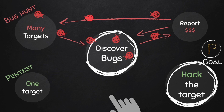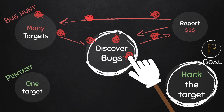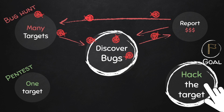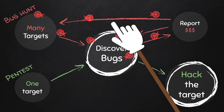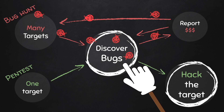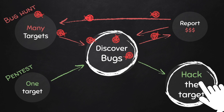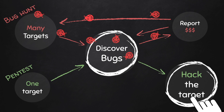In a pen test, you have only one target, because a company or website owner approaches you and says they want you to test the security of their application. The goal is not just to discover bugs — the goal is actually to hack that target. To do that, you discover bugs and vulnerabilities and exploit them. So you have an extra step: the exploitation step, where you must exploit the bugs and vulnerabilities you find in order to hack into the target server.